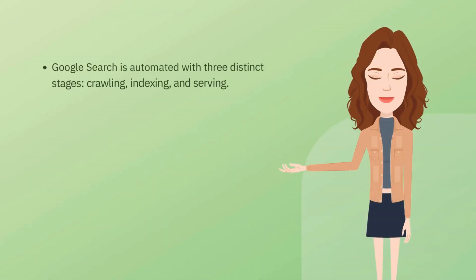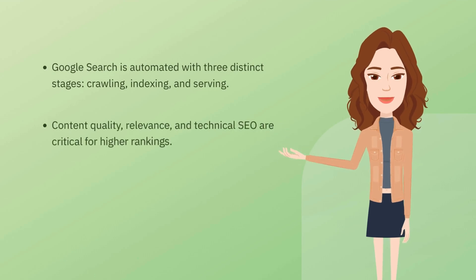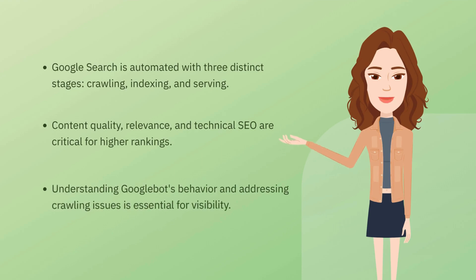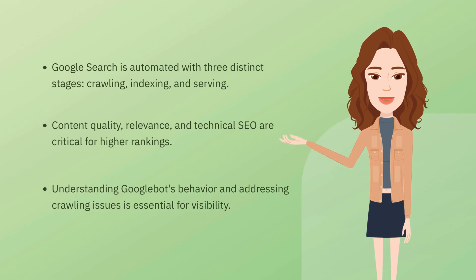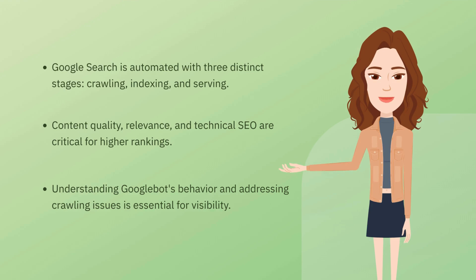To recap, Google Search is automated with three distinct stages: crawling, indexing, and serving. Content quality, relevance, and technical SEO are critical for higher rankings. Understanding Googlebot's behavior and addressing crawling issues is essential for visibility. Canonicalization and proper indexing management prevent duplicate content problems.